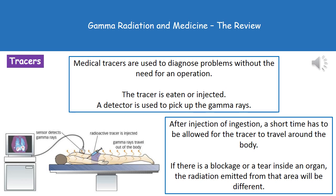Another use for gamma radiation in medicine is as a medical tracer — another way to diagnose problems with a patient without the need for surgery, and obviously with no risk of infection. The person will either eat or inject the tracer, depending on which organ system is being examined. A detector is then passed over the surface and picks up the gamma rays exiting the body. We need to leave it for a short time after injection or ingestion so the tracer has a chance to travel around the body. If there's an area with a blockage or a tear, we will see different amounts of radiation emitted from that area, therefore targeting where the problem actually is.